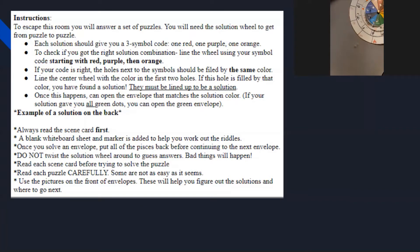Always read the scene card first. You can provide a blank whiteboard sheet and a marker to help kids solve out the riddles as they will have to use their math skills. Once you solve the envelope, remind kids to put all the pieces back before continuing to the next envelope, otherwise a big mess could occur. Tell kids to not switch the solution around to guess answers because bad things will happen. Read each puzzle carefully because some are not as easy as it seems. Use the pictures on the fronts of the envelope as they will help you figure out the solutions and where to go next.